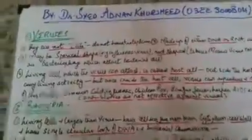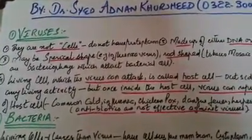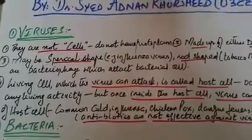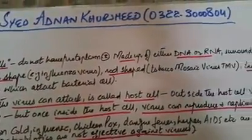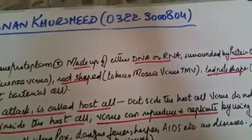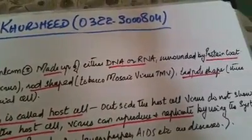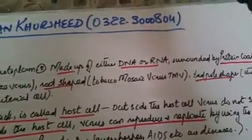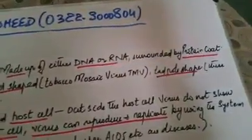Assalamu alaikum, my dear students. This is another short lecture regarding viruses and bacteria. Viruses are not actual cells because they do not contain protoplasm. What they only contain is a single strand of DNA or RNA surrounded by a protein coat. Therefore, viruses can be divided into either DNA viruses or RNA viruses.